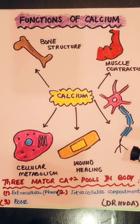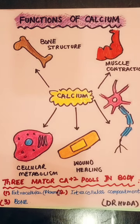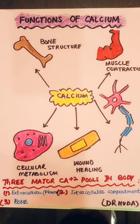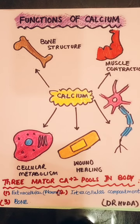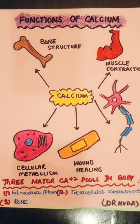Blood clotting is very dependent on calcium. It is necessary for the coagulation cascade to be completed. The stimulation of the membrane potential is also due to the action of calcium. Calcium acts as a guard on the sodium receptors, which is important in muscle contraction and maintaining depolarization at the level of the cell membrane.